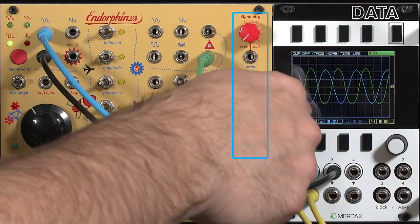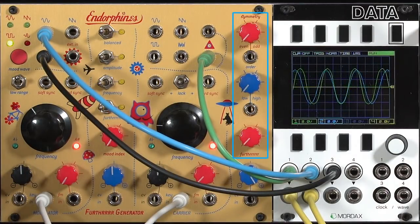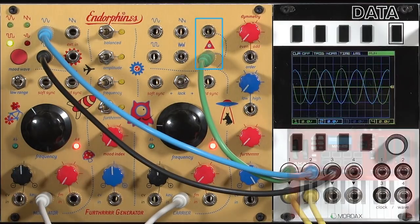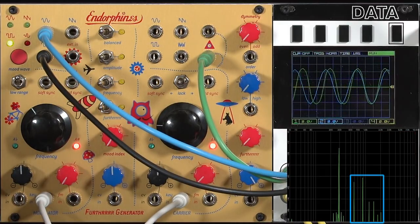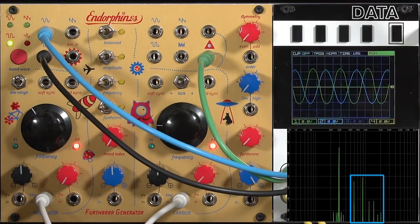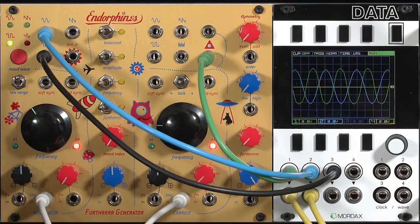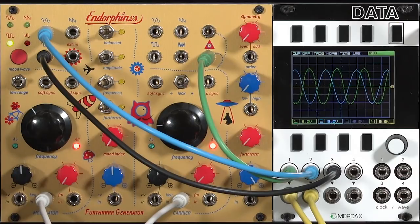When we have all three wave shaping controls set to full counterclockwise, the final output of the carrier is more or less a sine wave. You'll see it has a few additional harmonics, and those are present even if I'm not going through the Moog Mother 32. So factor that in when you're looking at some of the FM spectra. There's some extra harmonics because the sine wave is not pure, and that's true of virtually all analog oscillators.